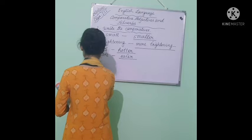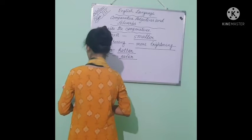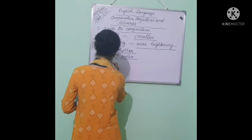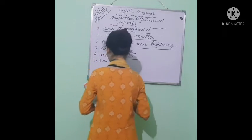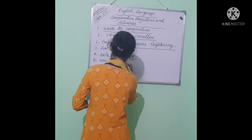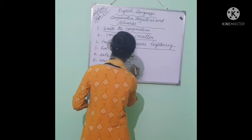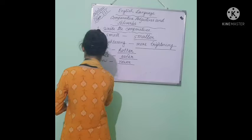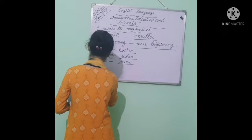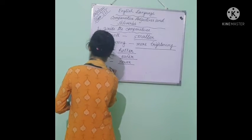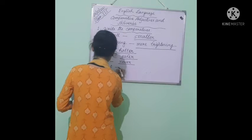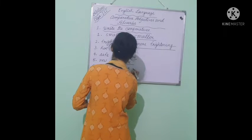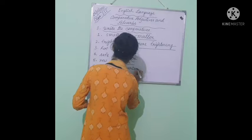Number five: the word is new — N-E-W. The comparative degree of new is newer — N-E-W-E-R. Newer. Number six: the word is smart. The comparative degree of smart is smarter — S-M-A-R-T-E-R. Smarter.